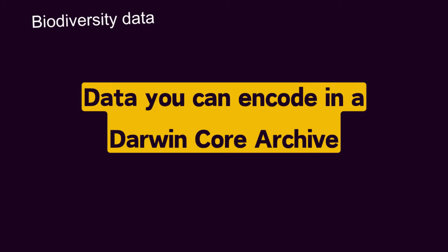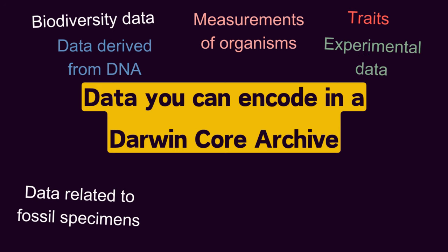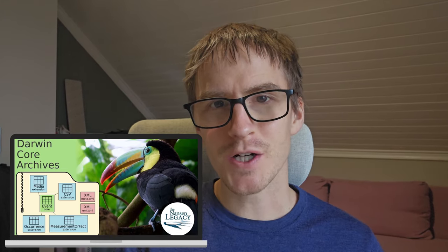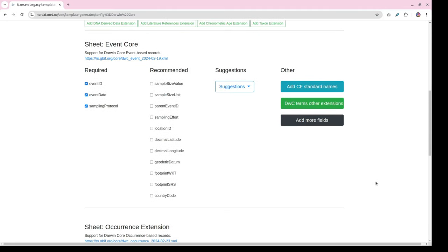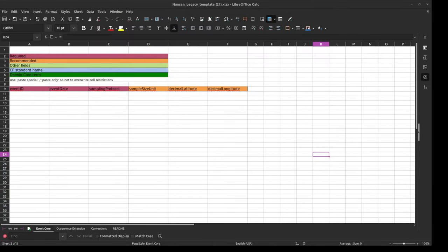We also have Darwin Core Archives. These were originally designed for biodiversity data — that is when and where an organism's been observed — but they can now be used to encode a lot of different data related to that, for example measurements, traits, fossil specimens, data derived from DNA, and some experimental data. I have a whole video about Darwin Core Archives and how to create them, so I'll put a link to that in the description. I also have another video about the Nansen Legacy Template Generator, which is a template generator you can use to create Excel templates designed to make it easy to create a Darwin Core Archive. There are other FAIR-compliant data formats out there, and I'm sure more are being developed — let's have a discussion about other data formats in the comments.